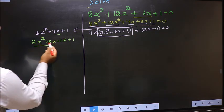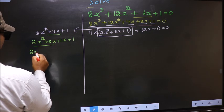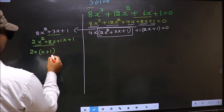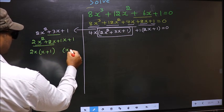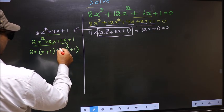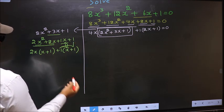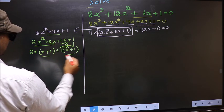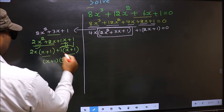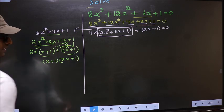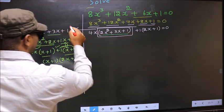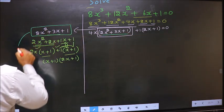From the first 2 terms, what can be taken out common is 2x. So you get 2x(x + 1). From the next 2 terms, you get the same group (x + 1). Now from this, x has gone inside, so outside you get +1. Even if you multiply and check you get the same thing. Now take out (x + 1) common, so you get (2x + 1).